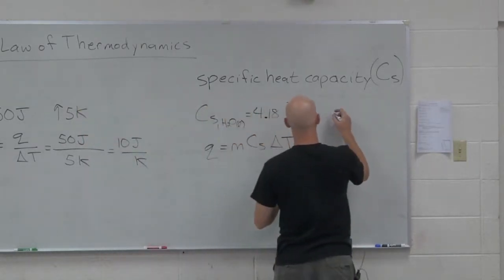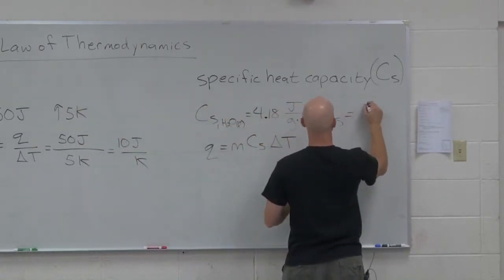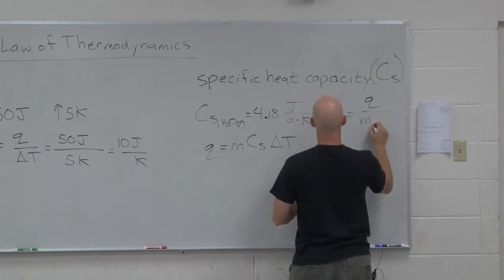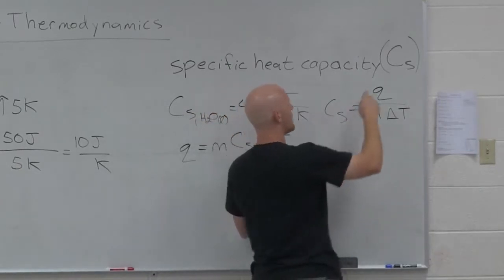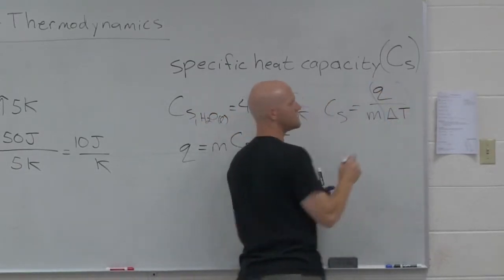Notice, lovely equation, q equals mc delta t way back in the day. So if you rearrange this, you see what the specific heat capacity really is. Well, if you recall, what's q over delta t all by itself?